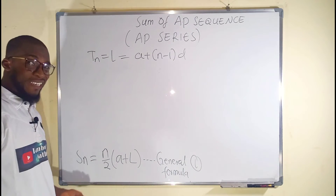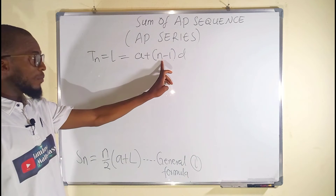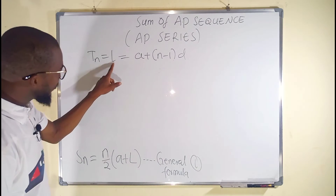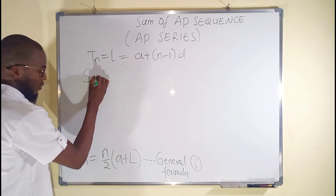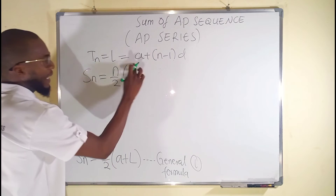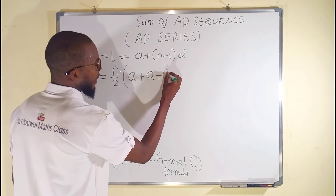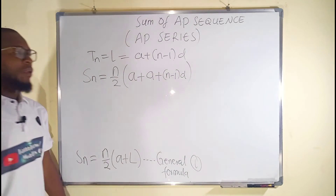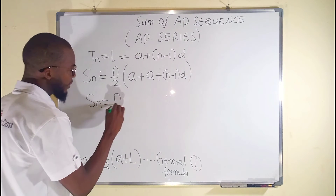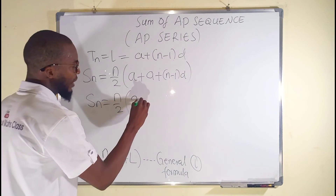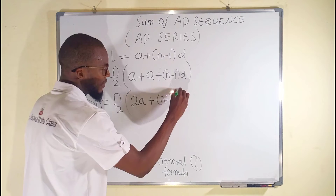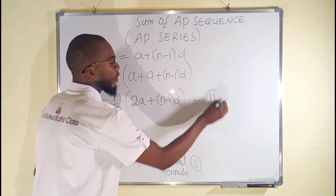Now let us substitute L = a + (n-1)d into our first formula. Sn = (n/2) times [a + a + (n-1)d]. Combining the two a's, we get the second formula: Sn = (n/2) times [2a + (n-1)d]. This is our second formula.